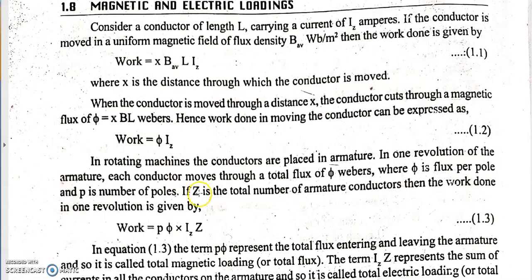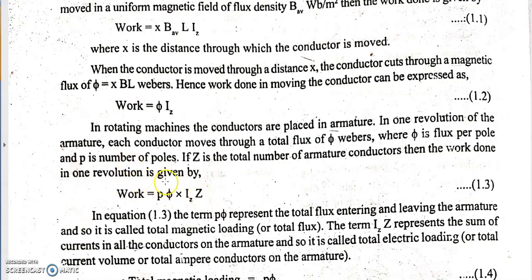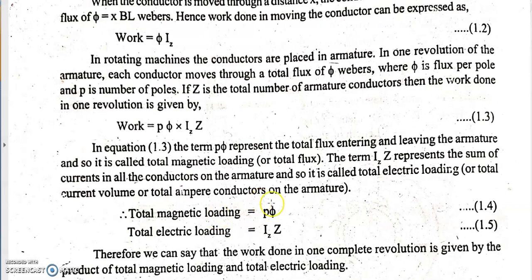In an actual practical machine, P number of poles produce the flux necessary for the electromechanical energy conversion process, and Z number of conductors are present. So the total work done is given by the product of total magnetic loading and total electric loading. The term Pφ is represented as total magnetic loading and the term Iz × Z is represented as total electric loading.